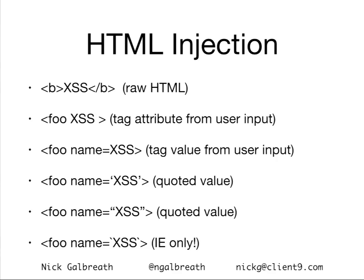I call this HTML injection. User input comes from somewhere — command line, post args, query strings, whatnot — and somehow it gets inserted into different areas. It could be right into the page, where an attribute is, in an unquoted value, single-quoted, double-quoted. And for IE only, there's a back-tick version. You could also have cross-site scripting in HTML comments, but I just don't think that's too common.